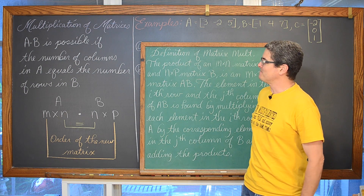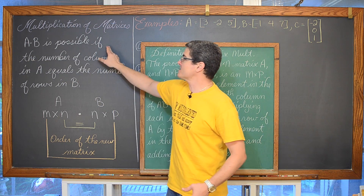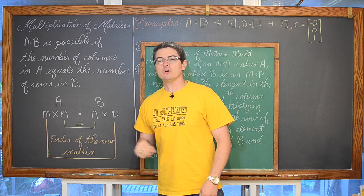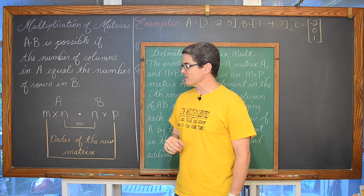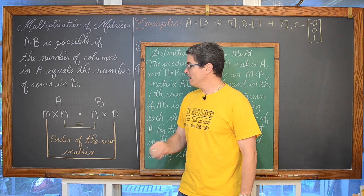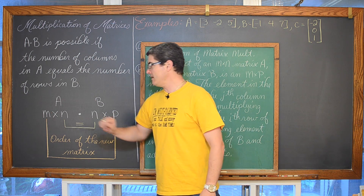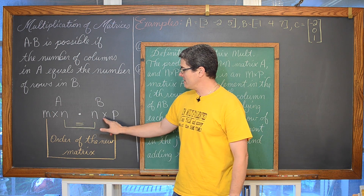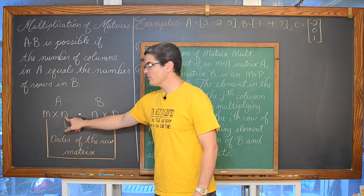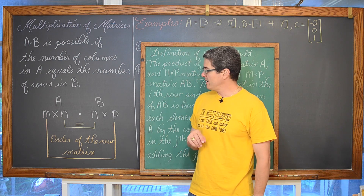Multiplication of matrices. Matrix A times matrix B is possible if the number of columns in A equals the number of rows in matrix B. Or in symbols, matrix A times matrix B, A having the order of M by N, and B having the order of N by P. The number of columns in A has to be equal to the number of rows in B.